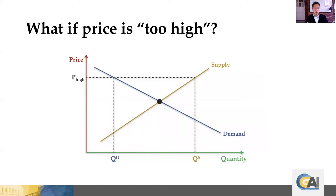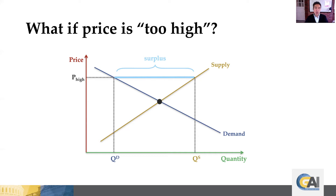What if the price is too high? In this case, you're again creating a wedge between the quantity demanded and quantity supplied — but here the quantity supplied is going to be relatively high and the quantity demanded relatively low. When you have a high price, that's very attractive to sellers but relatively unattractive to buyers. So this is going to create a surplus. There's a surplus because you can't force buyers to buy more than they want to buy — they're going to dictate how much is actually sold, which is the opposite of when price was too low.